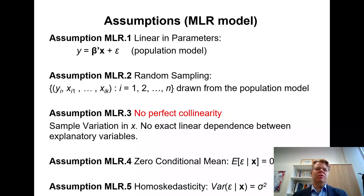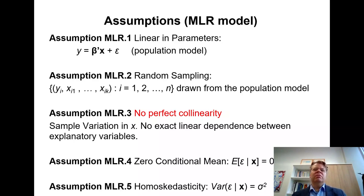Assumptions four and five are particularly about the data generating process and the random variable epsilon. The zero conditional mean in the multivariate case extends to: expected value of epsilon conditional on the entire vector of x variables equals zero. Similarly, the homoscedasticity assumption extends to: variance of epsilon conditional on all x variables equals constant sigma squared — and for clarity, this variance must be finite, so it cannot be infinitely large.